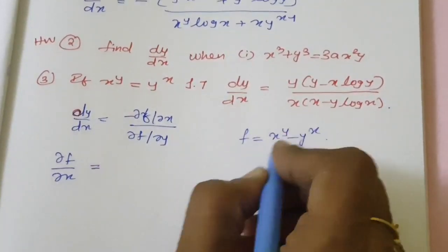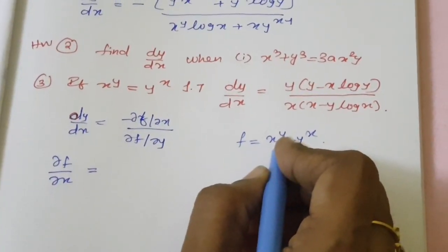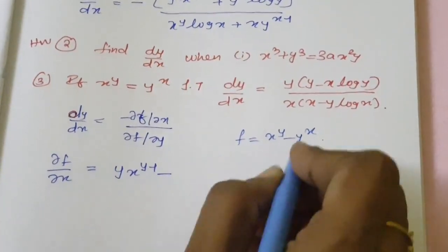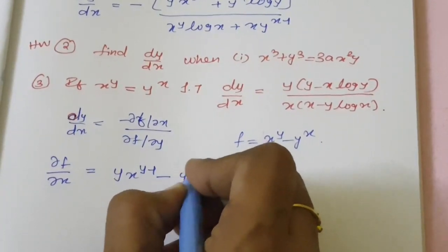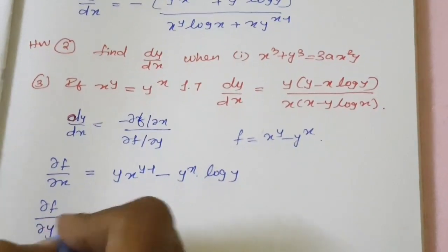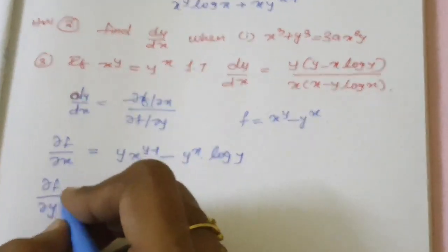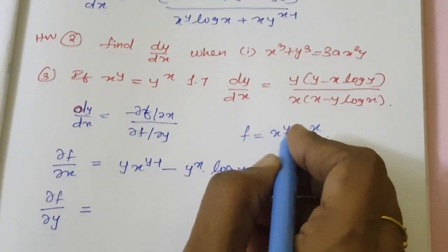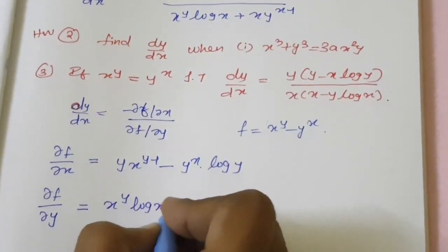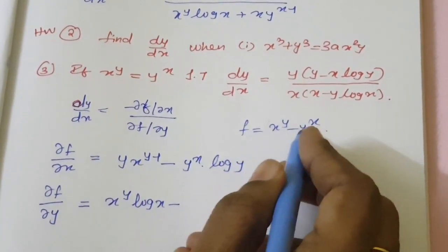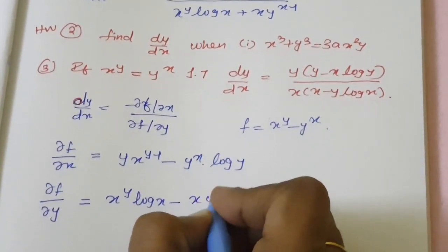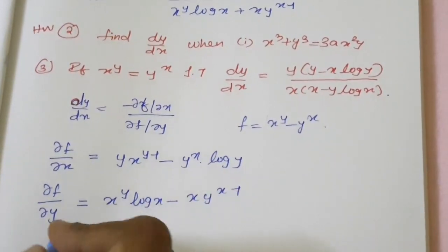With respect to x, differentiating x power y gives y into x power y minus 1. Minus y power x differentiated gives y power x into log y. Similarly, find ∂f by ∂y: x power y differentiated with respect to y gives x power y into log x, and y power x differentiated gives x into y power x minus 1.